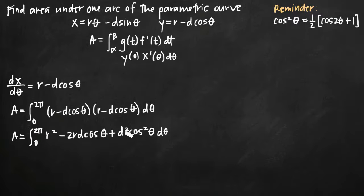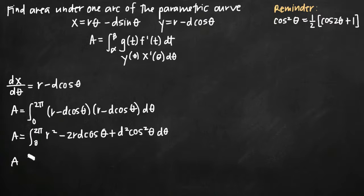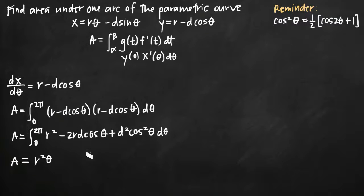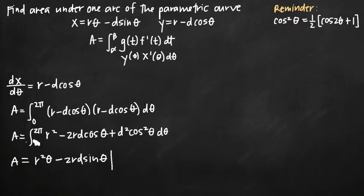The first two terms are really easy to integrate. The last term, d squared cosine squared theta, we're going to have to use our double angle formula for. For the first two terms: the integral of r squared becomes r squared theta, and the integral of negative 2rd cosine theta — with negative 2rd as a constant coefficient — gives negative 2rd sine of theta. We'll be evaluating all of that on the interval 0 to 2 pi.